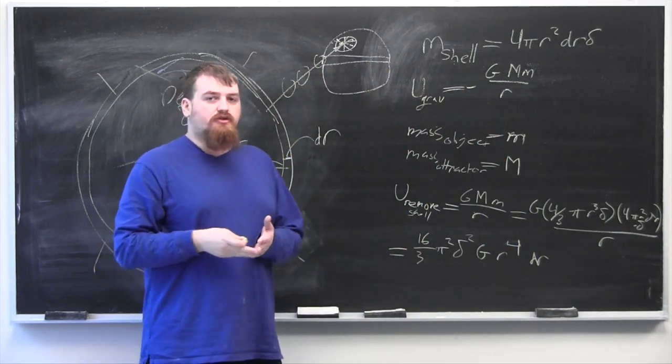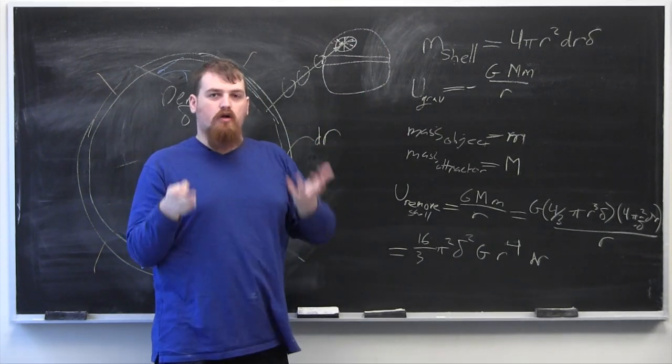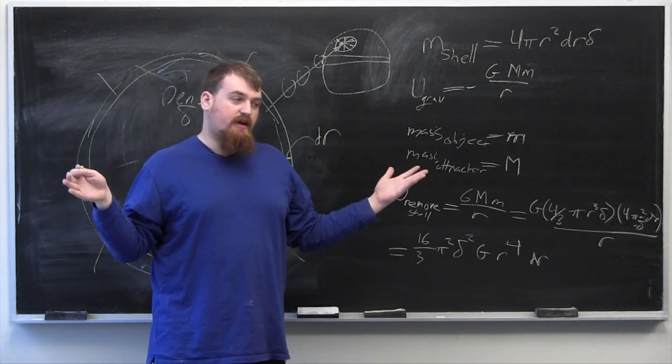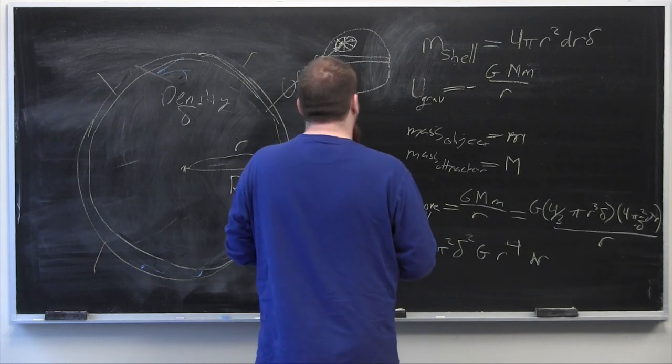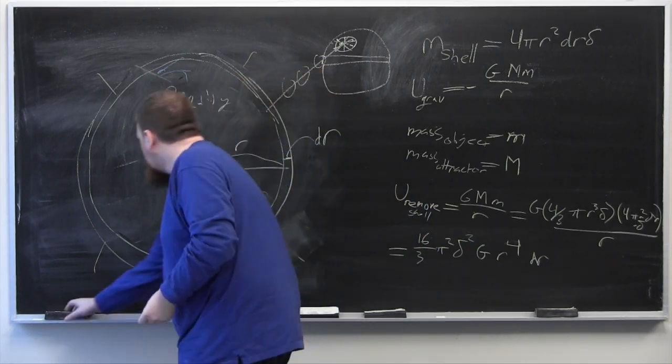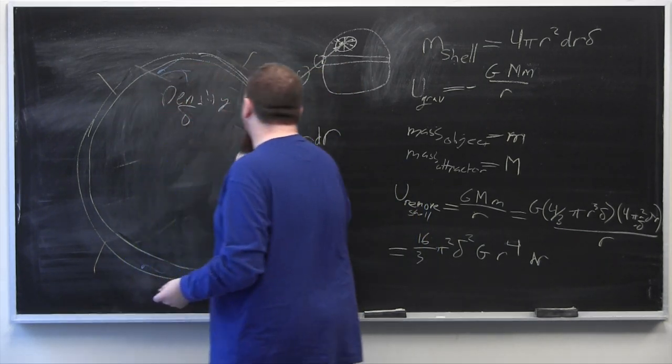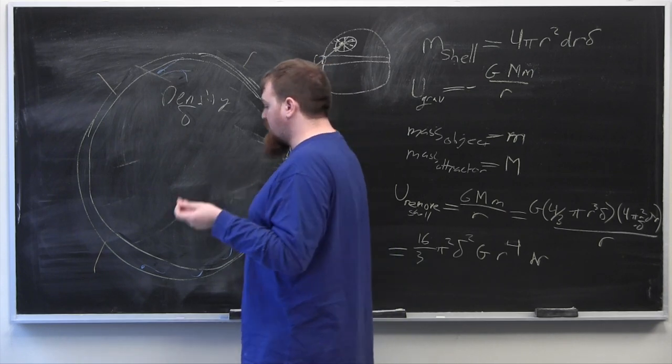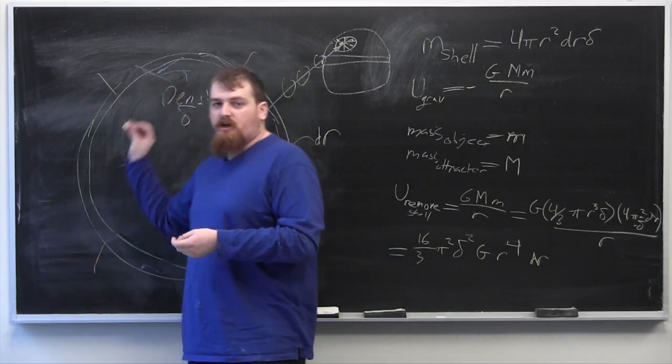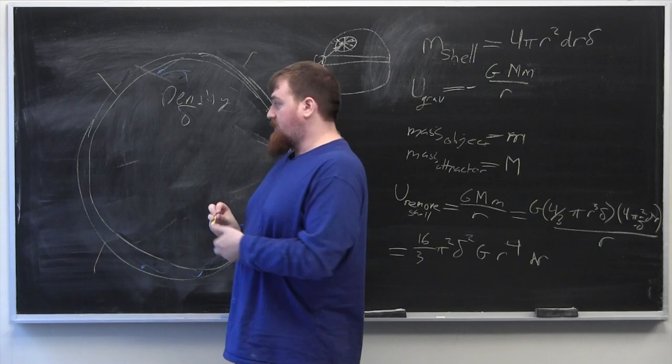So then, to find the energy we need to blow off all these shells and thus blow Alderaan into bits at infinity, we integrate this. And we're going to integrate from 0 to big R since we have to blow off shells from big R all the way down to 0.